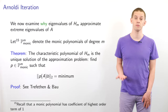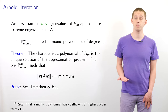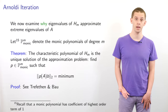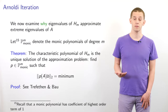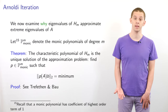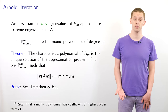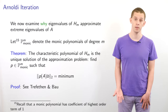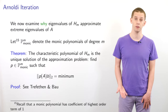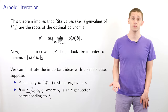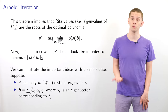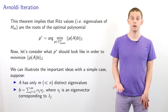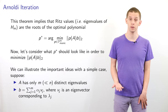We now examine why the eigenvalues of H_M approximate the extreme eigenvalues of A. Let P_M^{monic} be the set of monic polynomials of degree M — all polynomials of degree M where the leading coefficient equals 1. There is a theorem stating that the characteristic polynomial of H_M is the unique solution of the approximation problem: find P in P_M^{monic} such that the Euclidean norm of P(A)·B is minimized. The details can be found in the Trefethen and Bau textbook. This theorem implies that the Ritz values — the eigenvalues of H_M — are the roots of the optimal polynomial P* that minimizes ‖P(A)B‖.